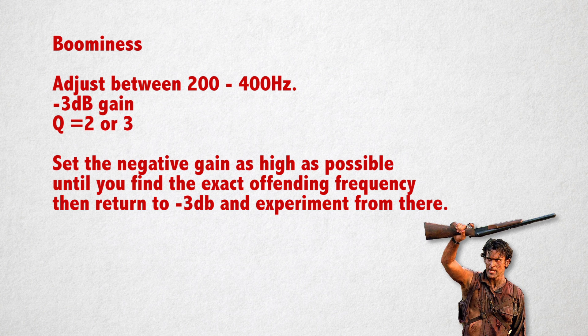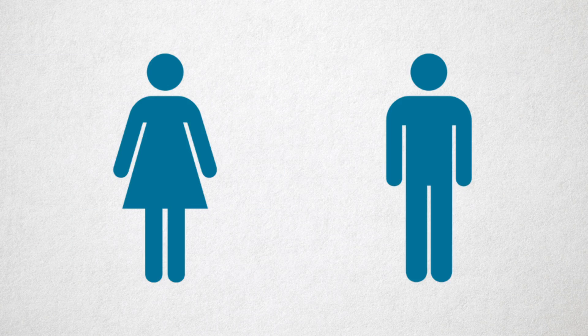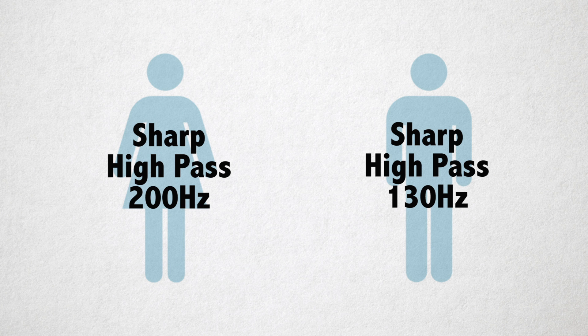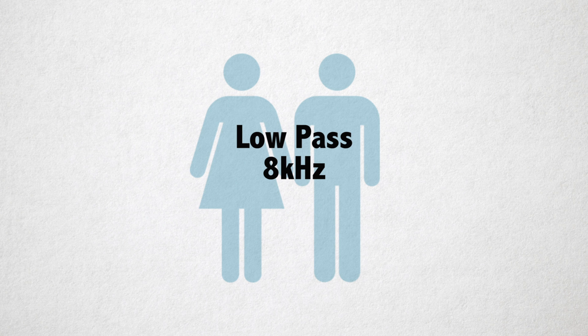More often than not, you're going to get audio that was recorded in less than ideal conditions. We can rely on our old friend EQ to help here too. A common issue is that your shooting location can be boomy. While this won't help with reverb — I'll cover that later — you can minimize some boominess by adjusting the frequencies between 200 to about 400 hertz. A 3dB dip and a Q of about 2 or 3 is a good place to start. Set the negative gain as high as possible until you find the exact offending frequency, then return to minus 3dB and experiment from there. If the dialogue has noise in the lower ranges, try a high-pass filter — a filter that only lets the high frequencies through. For males, try a sharp high-pass around 130 hertz, and for females, start around 200 hertz. If there's noise in the higher frequencies, try a low-pass filter, which allows only low frequencies to pass. Start around 8 kilohertz and adjust from there.